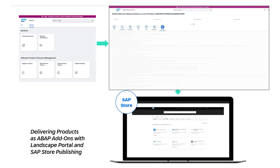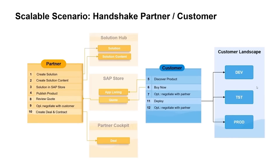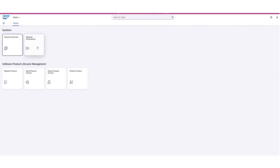With scalable delivery, partners can develop ABAP cloud extensions and deliver them as add-on products. The process involves three key areas: the partner landscape where the extensions are developed, the customer landscape where these extensions are consumed, and the Landscape Portal on SAP BTP which connects both worlds.